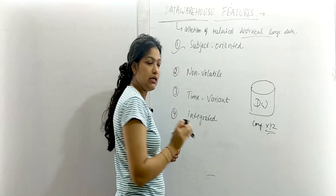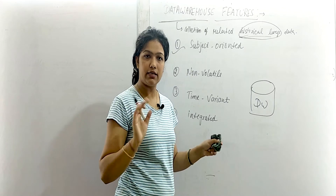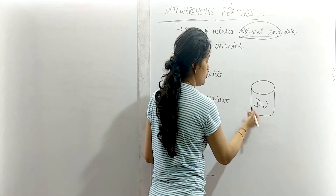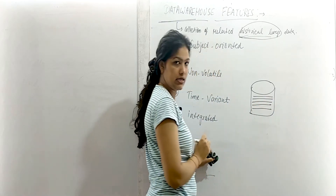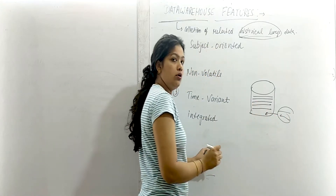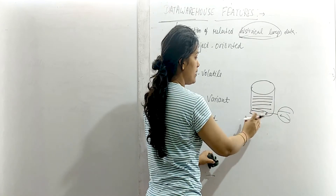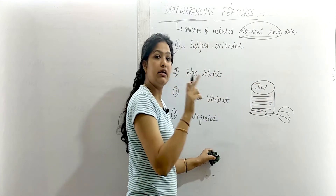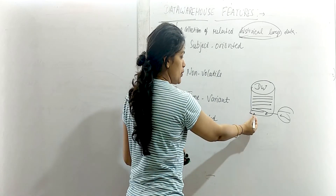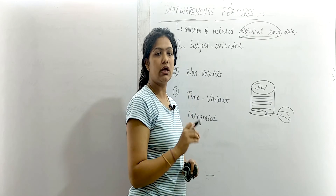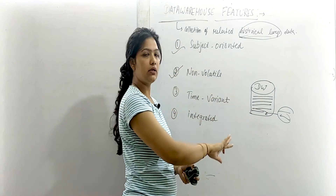The second feature is non-volatile. Since this is historical data, non-volatile means simply the things which cannot be deleted or erased. Once we have inserted data into the data warehouse, we cannot delete anything from it. We can insert new data and add new data, but we cannot delete the data. In a data warehouse, the data will remain forever. This is non-volatile — once you have inserted something in the data warehouse, you cannot delete the data.